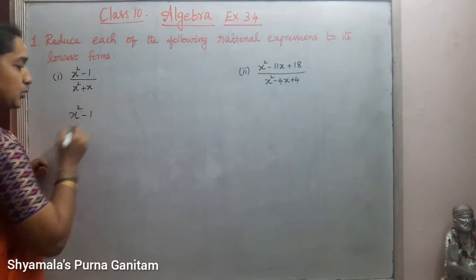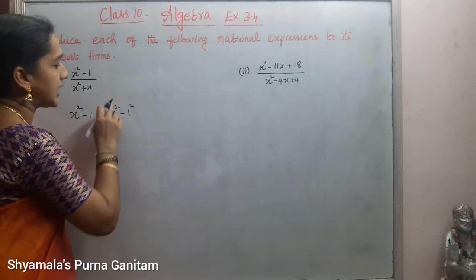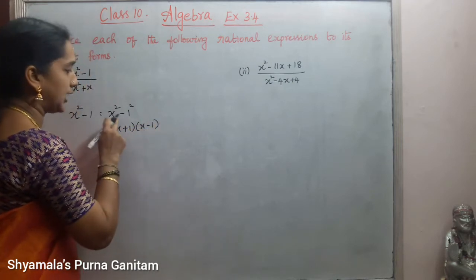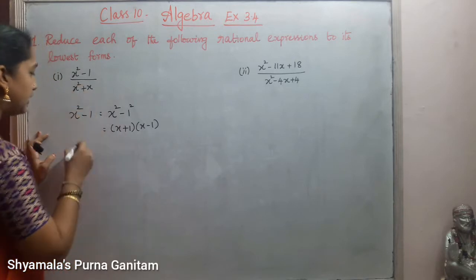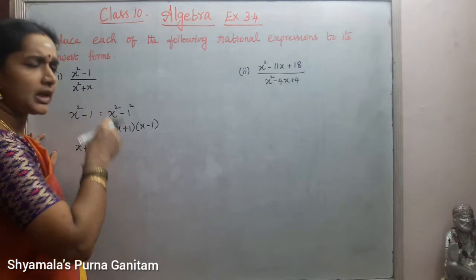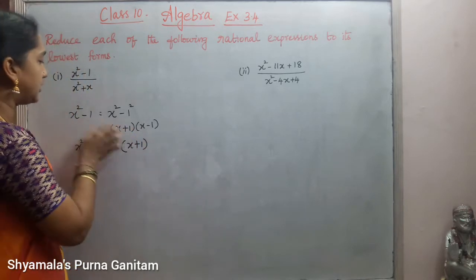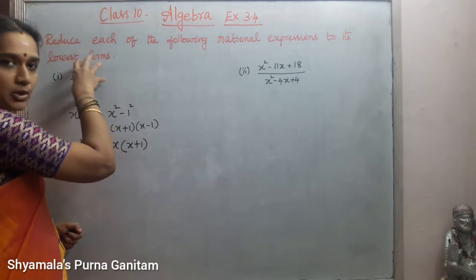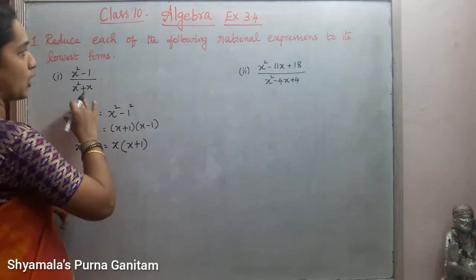First we will take x squared minus 1. This is of the form a squared minus b squared, where we can write 1 as 1 squared. So this expands as a plus b into a minus b, giving us x plus 1 into x minus 1. Then the denominator x squared plus x — we can take x as the common term, giving x into x plus 1. So we got the factors for both numerator and denominator.